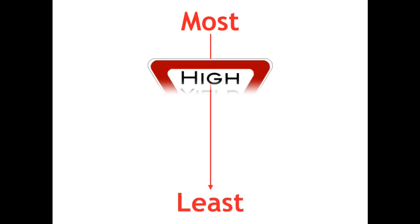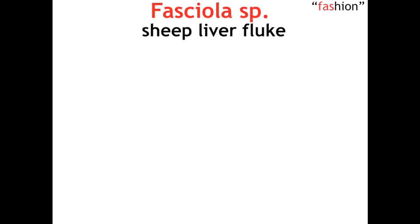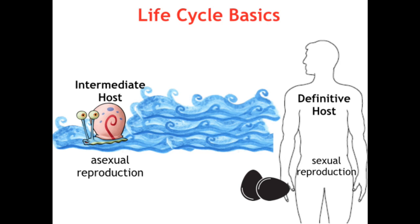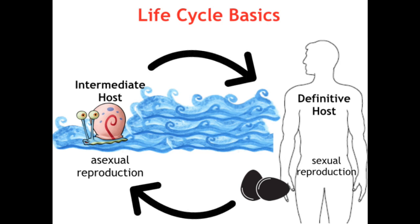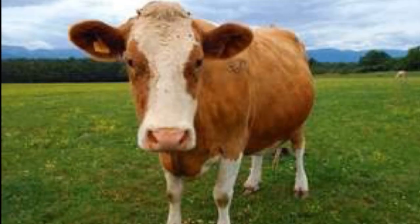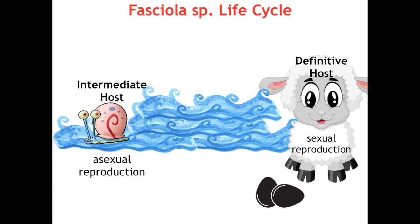Now that we've covered what all flukes have in common, we'll dive into species-specific details going from most to least high-yield, following BILL's order. First up are the liver flukes, starting with the Fasciola species — the 'fashion' part of our mnemonic. The Fasciolas are also known as the common sheep liver fluke — hence 'Fasciola the Fashionista.' Other mammals like pigs, cattle, or sheep are the typical definitive hosts, propagating the Fasciola life cycle.